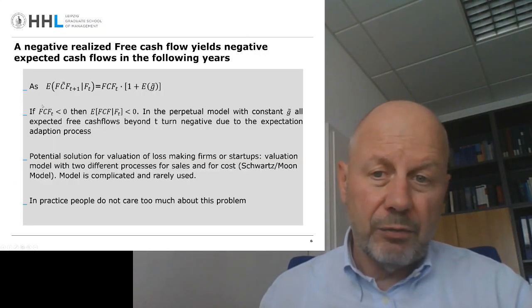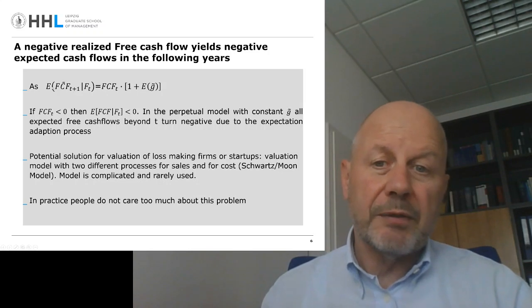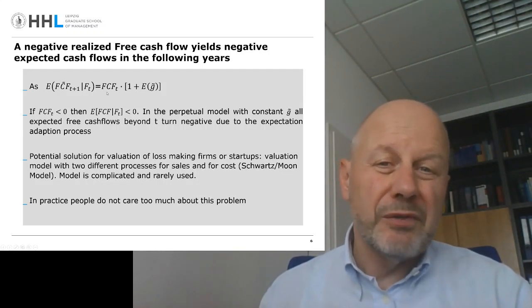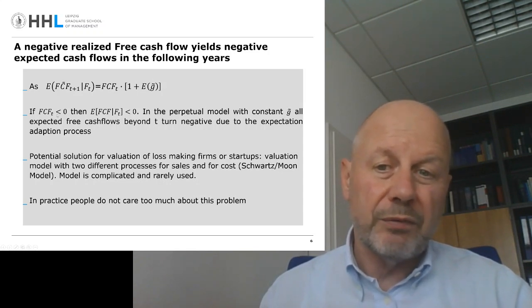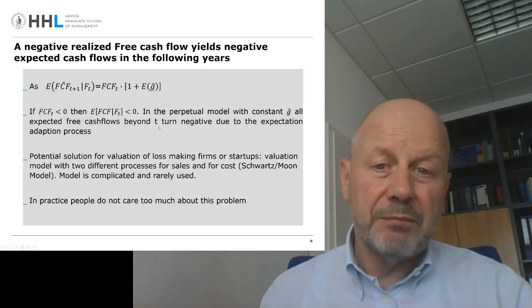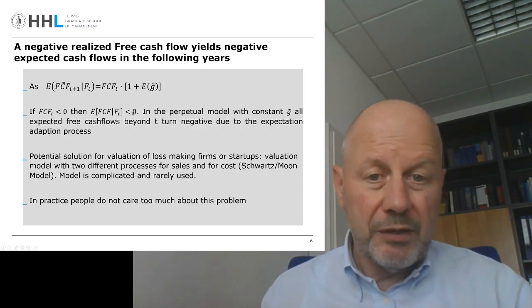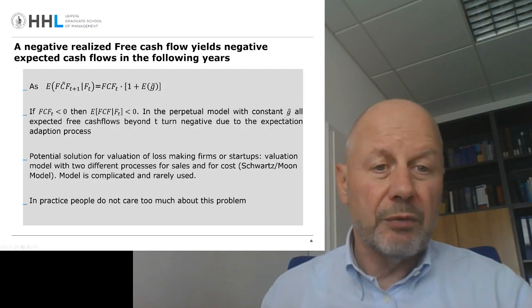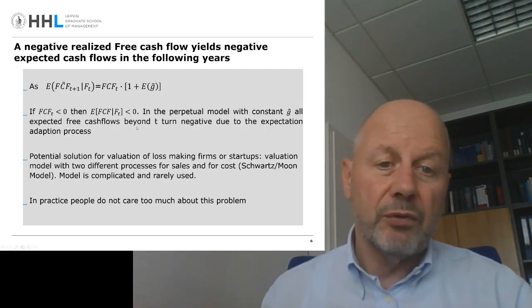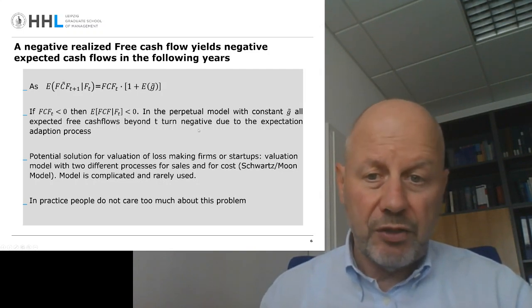As the free cash flow expectation in the next year, T plus one, is, according to this geometric random walk, calculated by taking the realized free cash flow this period and multiplying it by one plus the expected growth rate, a negative free cash flow realization in T yields that the expected free cash flows in the next period are smaller than zero. And in the perpetual model with a constant distribution of G, all expected free cash flows beyond T turn negative due to this expectation adaptation process.